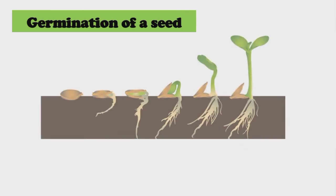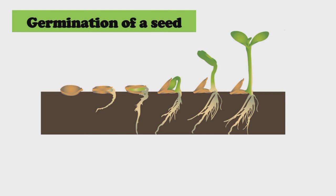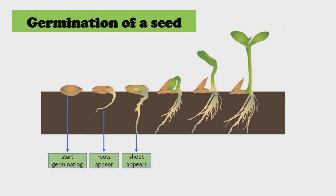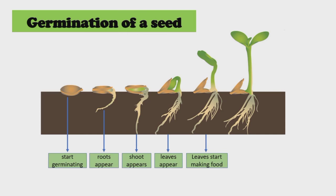Let us discuss germination through this picture. First, the seeds start to germinate and the roots start to appear. Then the shoot appears. The seed leaves provide the seedling with food. Then the leaves appear, and the leaves start making food. The seed coat falls off as the seed leaves have been exhausted, and the plant grows bigger and bigger.